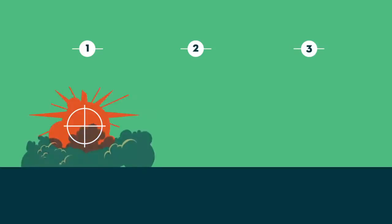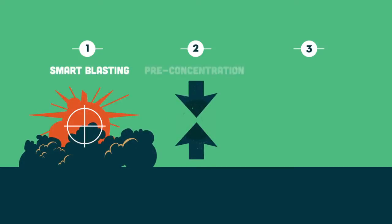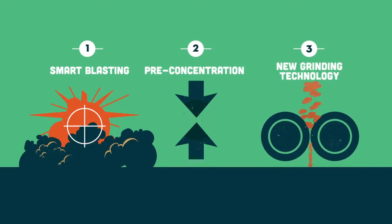Research by the mining industry has already identified the following options for improved comminution efficiency: smart blasting, pre-concentration, and new grinding technology.